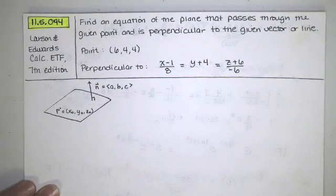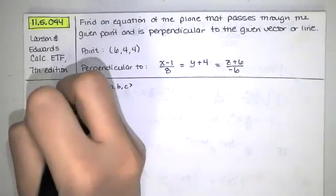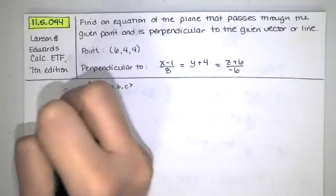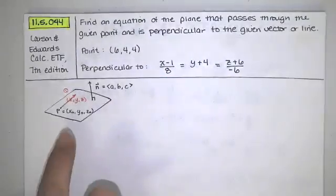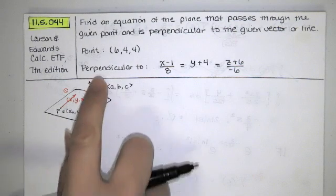And we define the plane in this way. The plane is the set of all points x, y, z. We call that point Q. Such that the vector from P to Q is perpendicular to that vector or orthogonal to that vector.